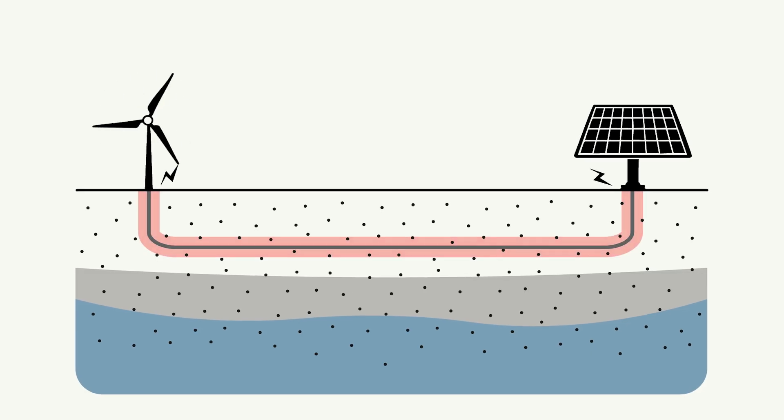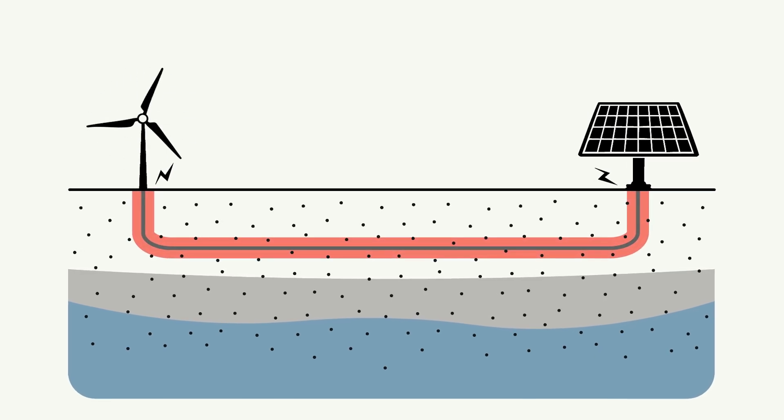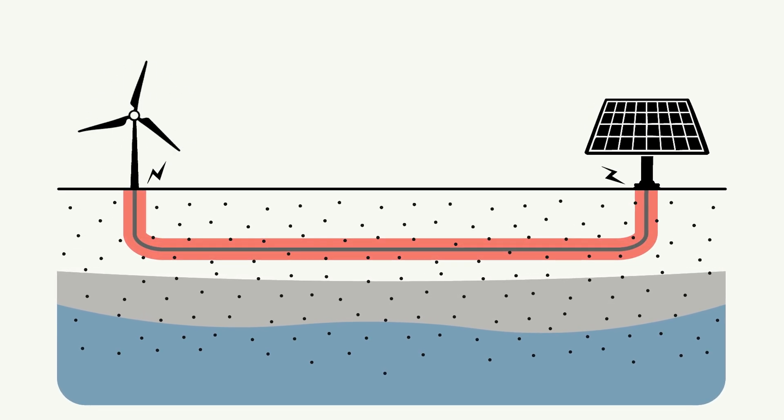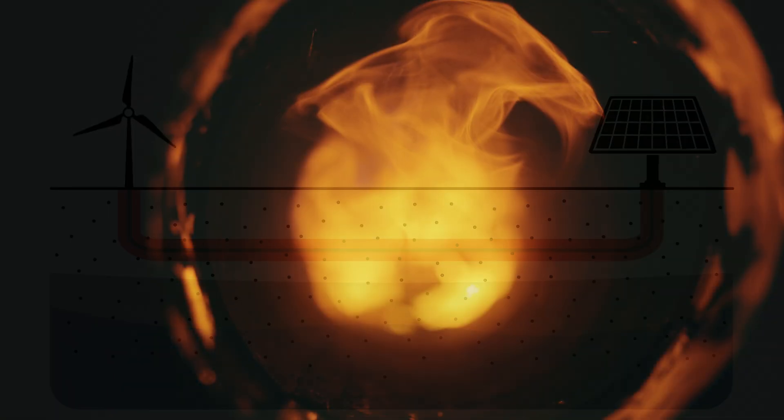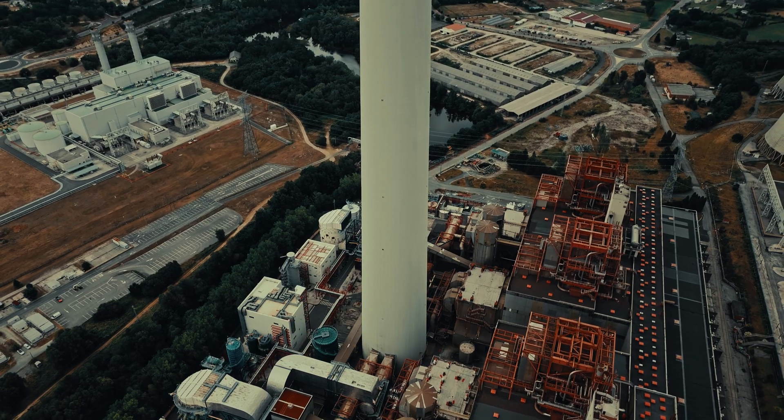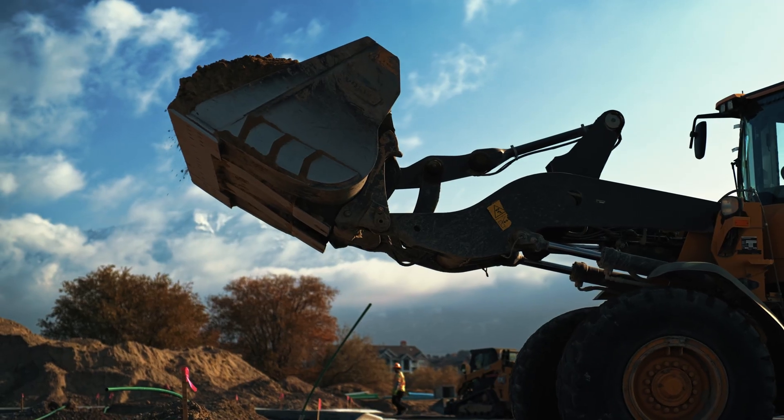When electrical energy passes through a conductor such as a cable, some of that energy gets converted to heat energy. So what needs to happen is that the heat generated by these cables needs to be dissipated through the surrounding medium, which in this case is soils.